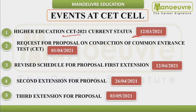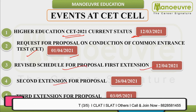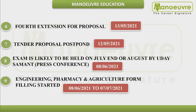CT update 2021 came in March. After that, a proposal for who will be conducting the CET exam started in April. Then a revised proposal came by mid-April. After that, extensions started — the second extension was on 26th April, the third extension in May, and the fourth extension in mid-May. Then the tender proposal was postponed further.